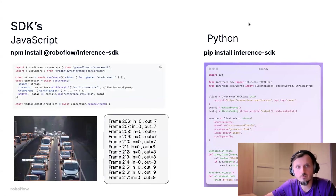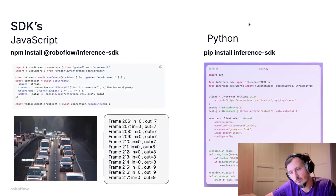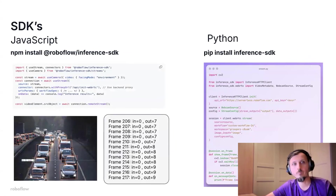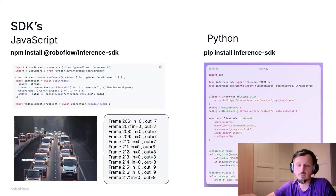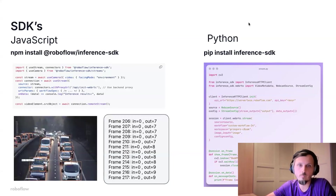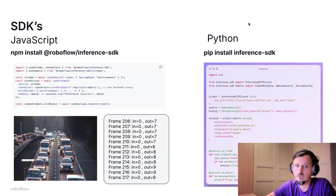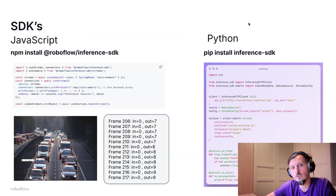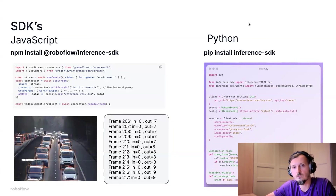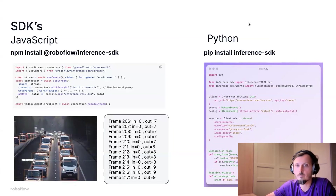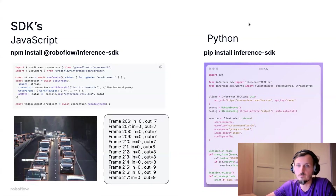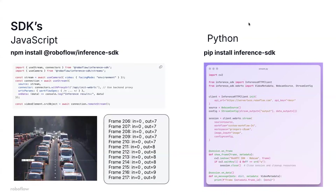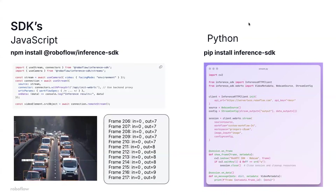Everything mentioned is made available through our SDKs — one for JavaScript and one for Python. With really just a few lines of code you can set up your processing pipeline very easily. Here you have examples — this is really everything you need to start processing.